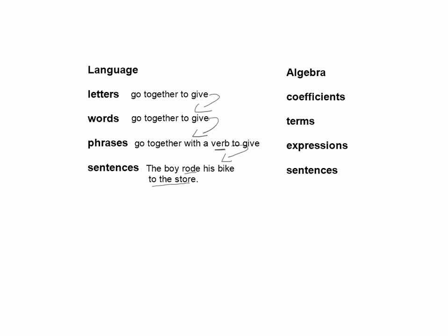Let's look at algebra - very similar. You have coefficients. Coefficients go together to give you terms. Well, first let's look at what is a coefficient. You can have a numerical coefficient such as 2 or 3.